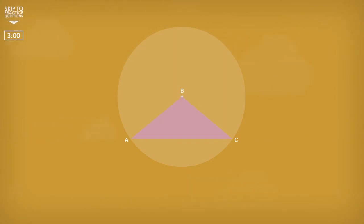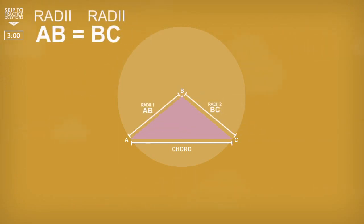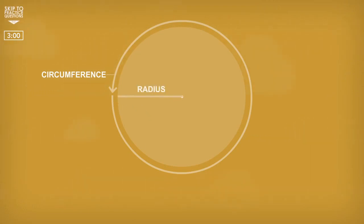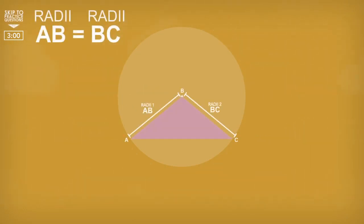The second part of this theorem is that an isosceles triangle is formed when a chord joins the centre of a circle by two radii lines. We call these radii lines because any straight line from the centre of a circle to the circumference is called the radius, therefore meaning AB is equal to BC, as they are both radii.